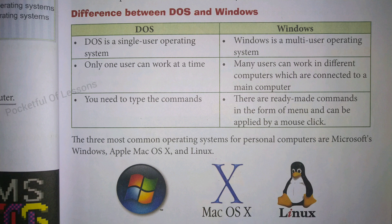Second point: in DOS, only one user can work at a time — only one user works on the system at one time, meaning on one computer. On the right side, in Windows, many users can work on different computers which are connected to a main computer. Different computers are connected to a main computer.